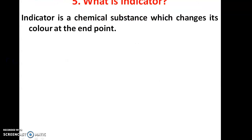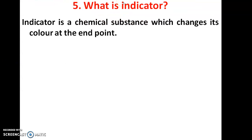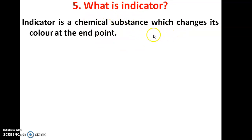What is an indicator? An indicator is a chemical substance which changes its color during the end point of a titration. It is called an indicator.